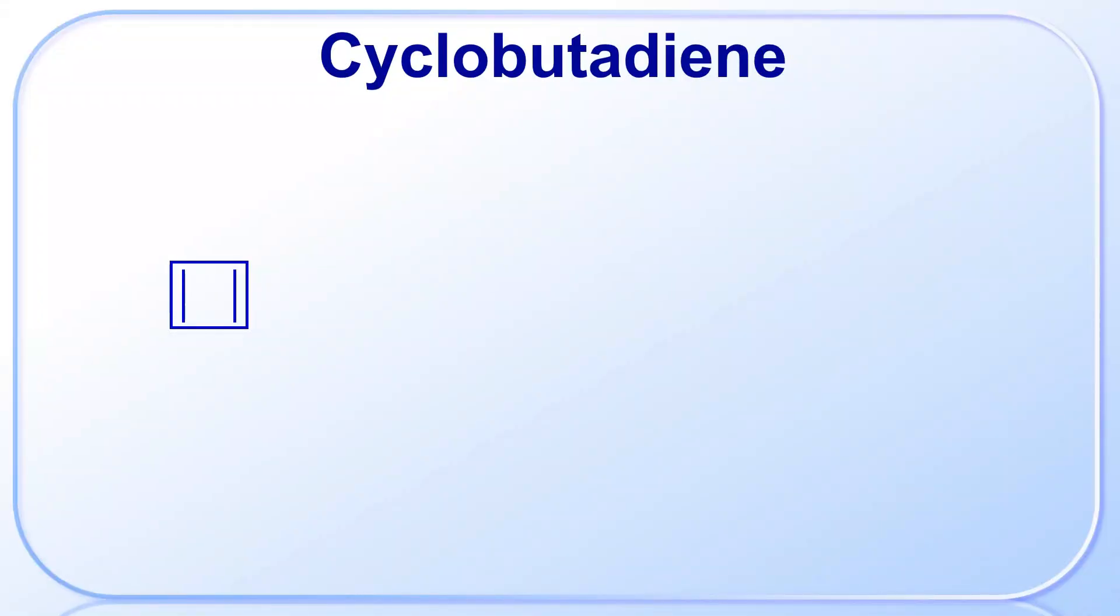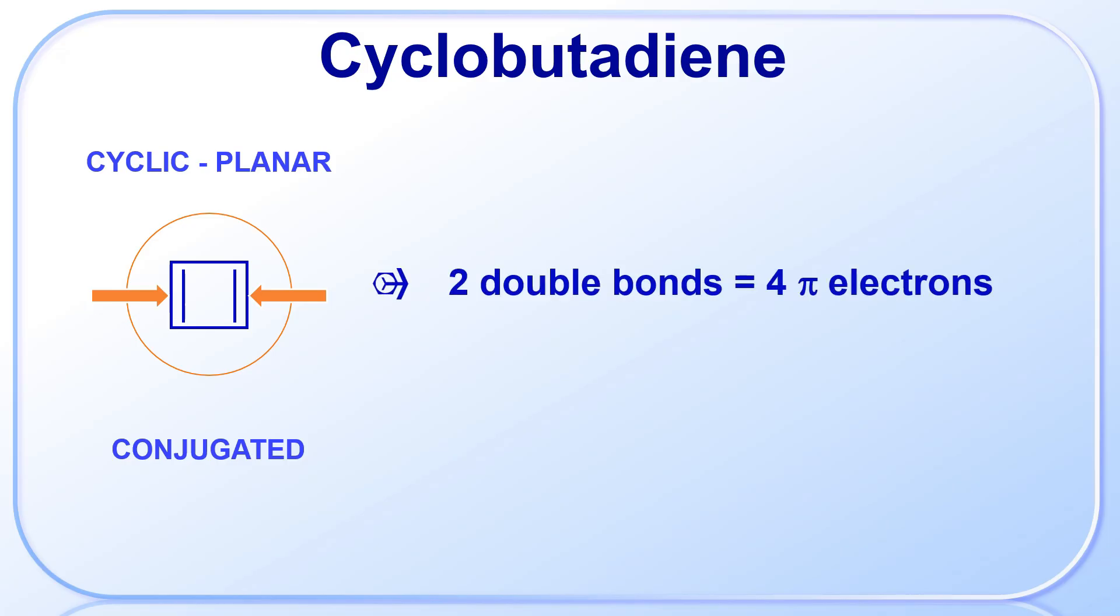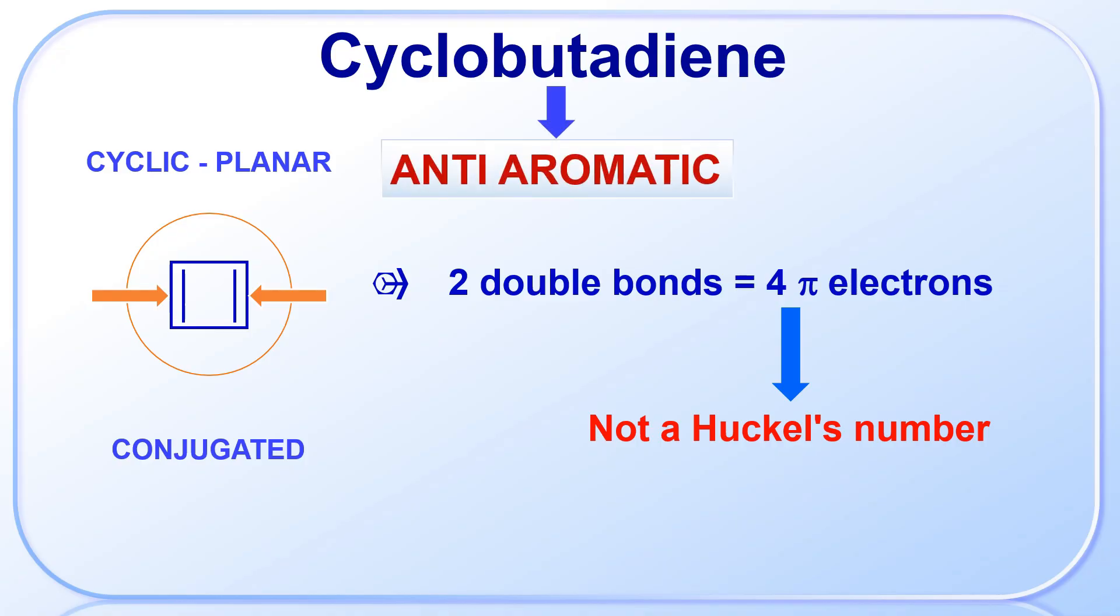Now, let us look at cyclobutadiene. It is also a cyclic and planar molecule. There are two double bonds in conjugation, which gives a total of four pi-electrons, but four is not a Hückel number. So cyclobutadiene is not aromatic. In fact, it is said to be an anti-aromatic compound, which means it is highly unstable. You will learn more about anti-aromaticity in your higher classes.